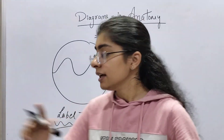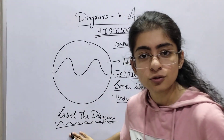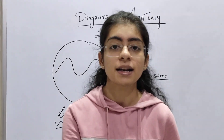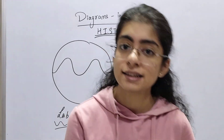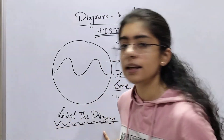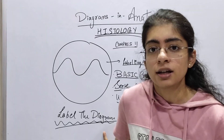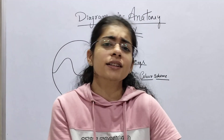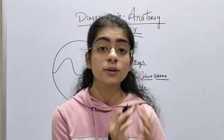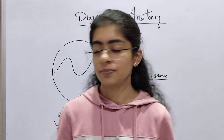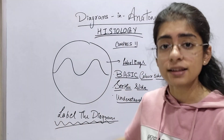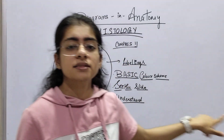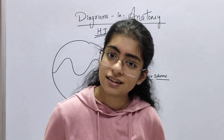For labellings, always place them on either side — left and right — not at the top and bottom. Another common mistake is failing to label the diagram's name. For example, if it is hyaline cartilage, you must write that label; don't just leave it as it appears in the question paper.